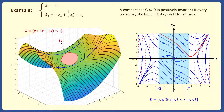This is because v-dot is negative on the boundary of omega, and therefore the trajectories on the boundary of omega go to an inner level curve. This continues until they finally converge to the origin where v-dot equals 0.